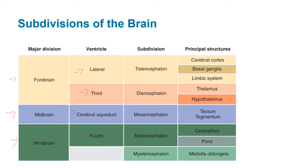When talking about subdivisions, the forebrain contains the telencephalon and the diencephalon. The midbrain contains the mesencephalon. The hindbrain contains the metencephalon and the myelencephalon. In the telencephalon there's the cerebral cortex, the basal ganglia, and the limbic system. In the diencephalon there's the thalamus and the hypothalamus. In the midbrain there's the tectum and tegmentum. In the hindbrain we've got the cerebellum, the pons, and the medulla oblongata.